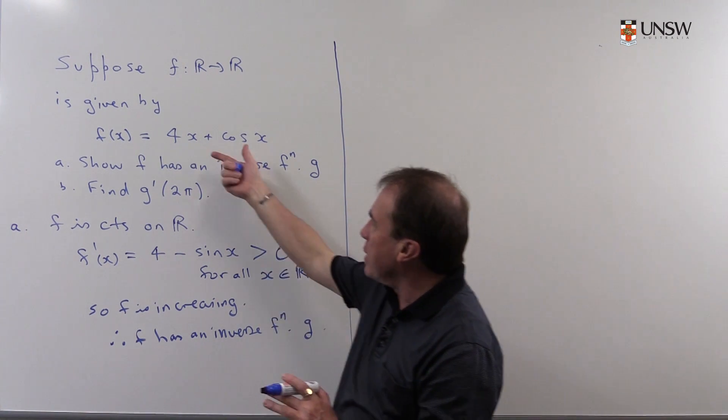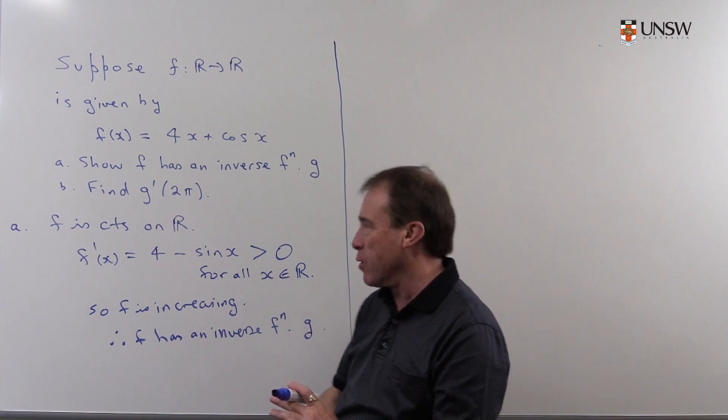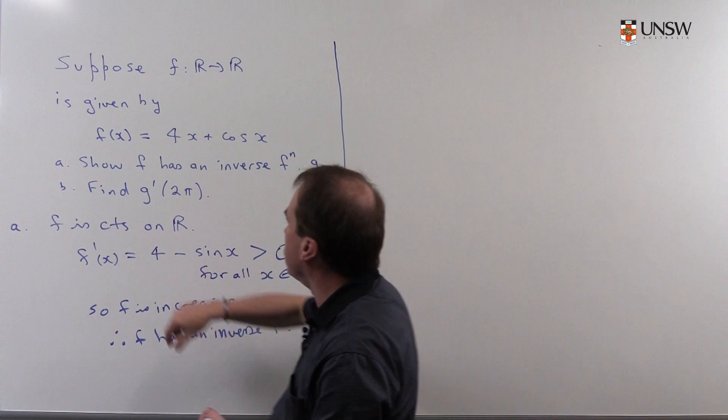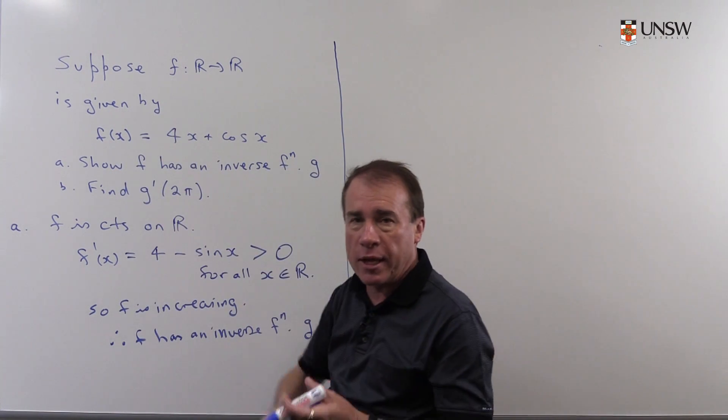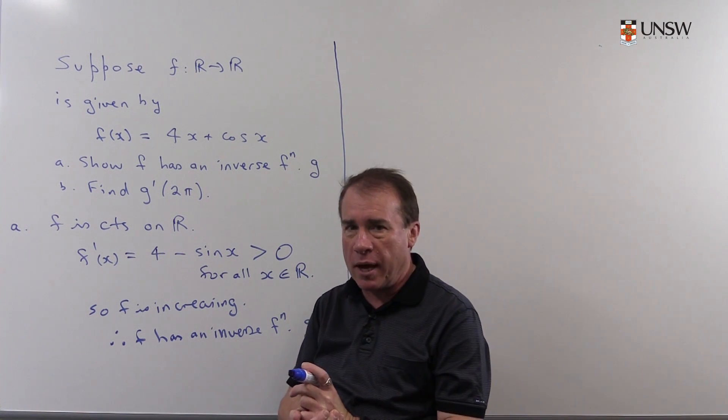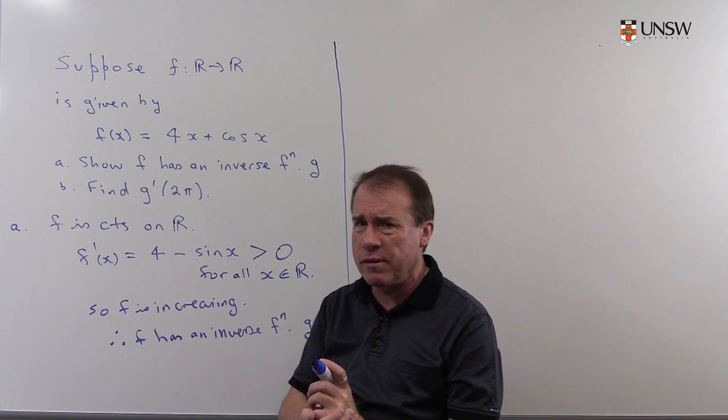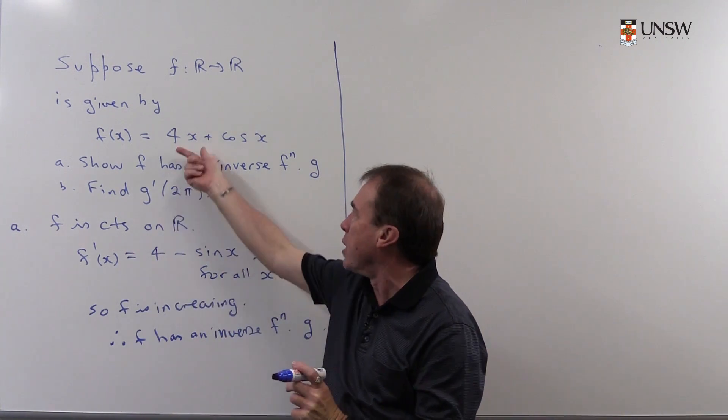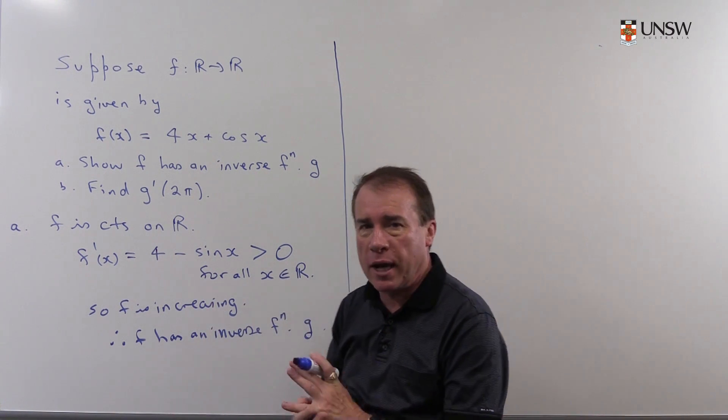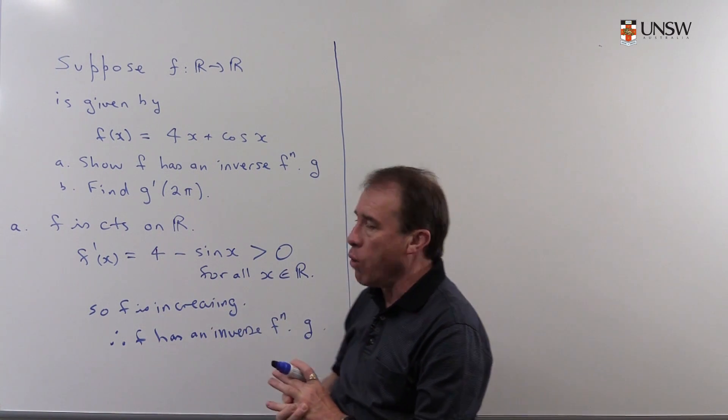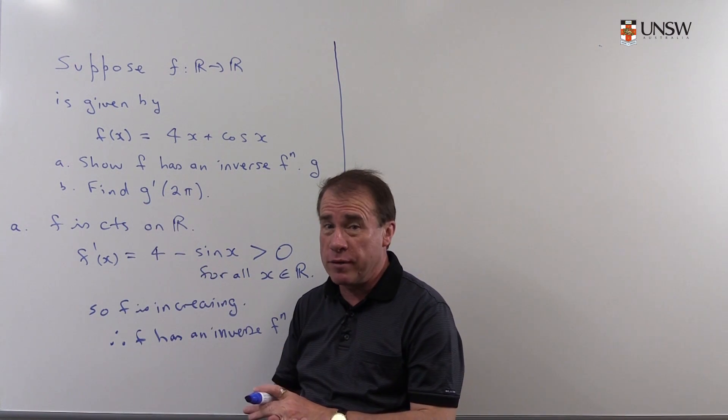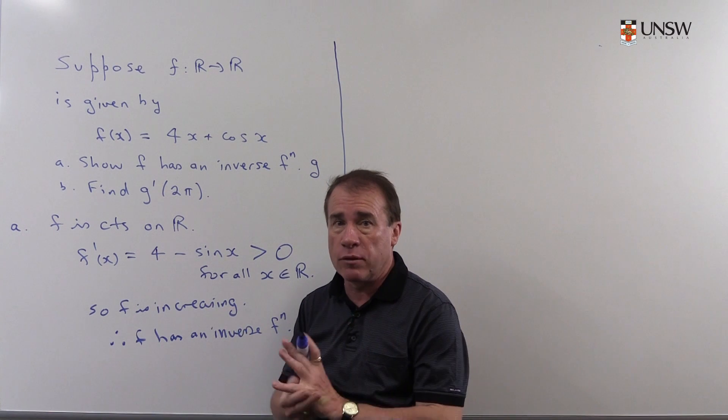But actually finding the inverse of this would be extremely difficult, if not impossible, because how would we algebraically find the inverse? Well, you put a y there, interchange the x and the y, then you've got to try and make y the subject of that. And that's very difficult, if not impossible, because the equation you get is a transcendental equation. You can't extract algebraically the y as a subject. So we're not going to do this by finding g itself. That is very hard to do, if not algebraically impossible.